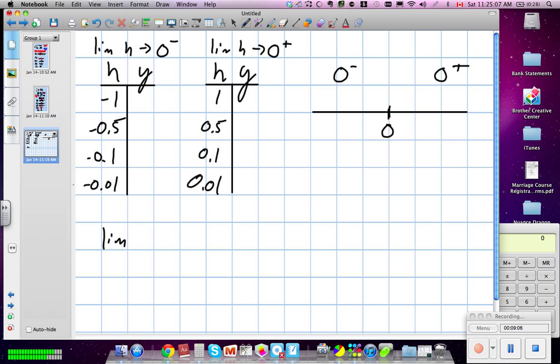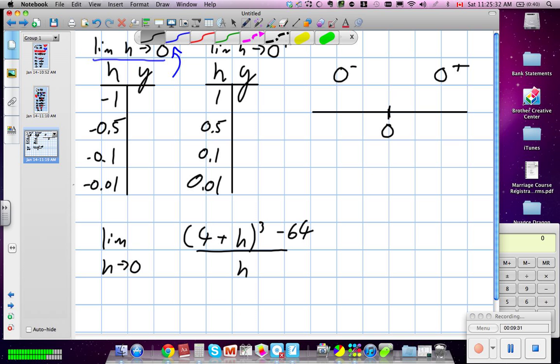Okay, so in this question, we have a limit of h approaching 0. They've given us a complex point of 4 plus h cubed minus 64 divided by h. When we just plug 0 in, we get a non-defined equation. So what we're going to do is do a little t-chart here to solve what the limit would be. And this one says the limit of h as we approach 0 from the left. So essentially, we're looking at numbers like negative 1, negative 0.5, negative 1.5.